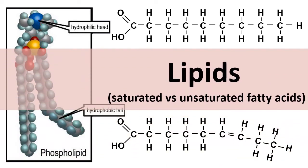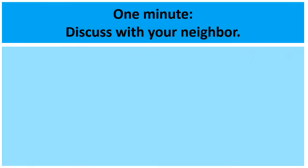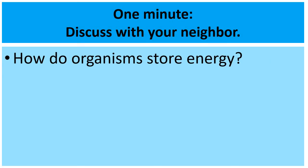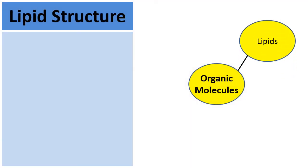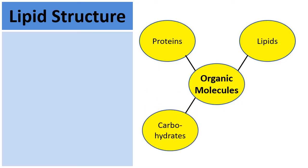The topic of this video is some of the characteristics of lipids and then saturated versus unsaturated fatty acids. We're going to talk about lipids today. Lipids are a type of organic molecules along with proteins, carbohydrates, and nucleic acids. That means they're molecules that are really built around carbon.